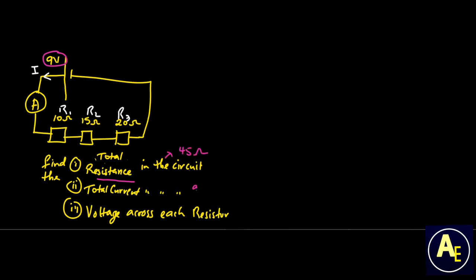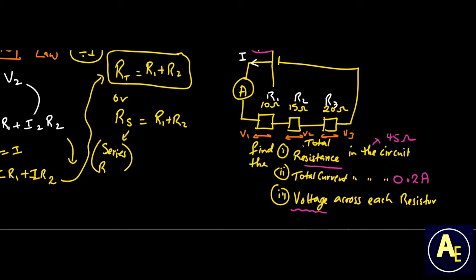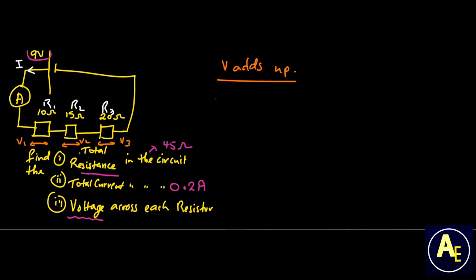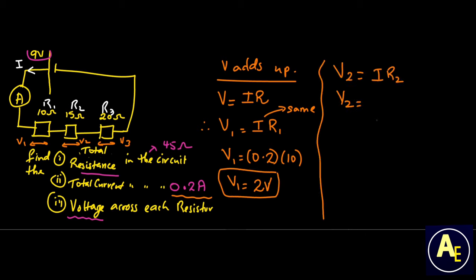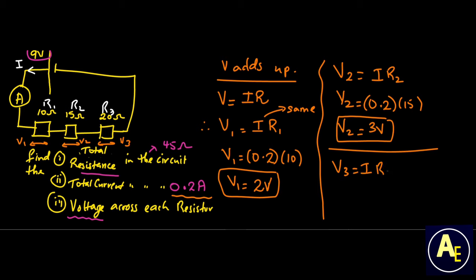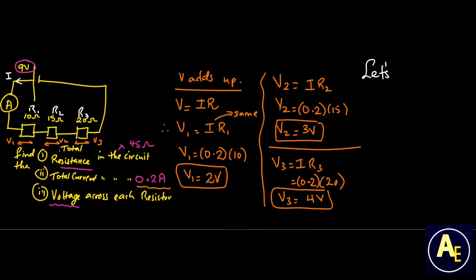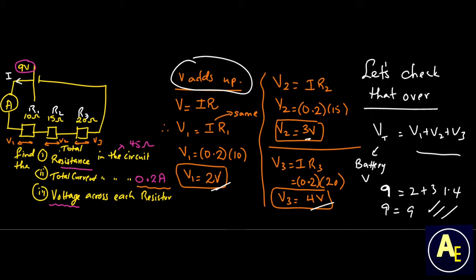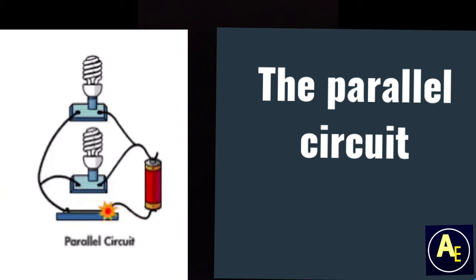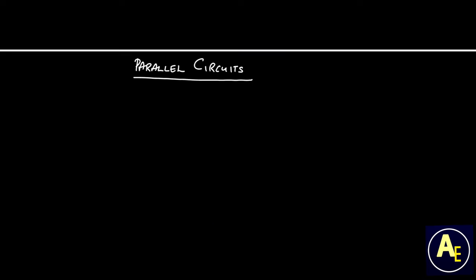This 0.2 A is the same for all three resistors — remember, the same number of cars must pass through all three tunnels. To find the voltage across each resistor, we attach a voltmeter across each one and use V = IR. Since current is the same (0.2 A) for all, we substitute each resistance value to get V1 = 2V, V2 = 3V, and V3 = 4V. Adding them: 2 + 3 + 4 = 9 volts — which matches our battery.